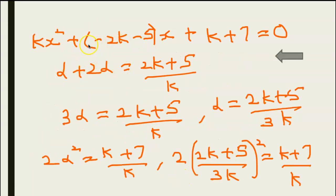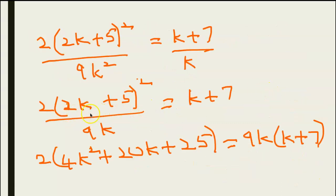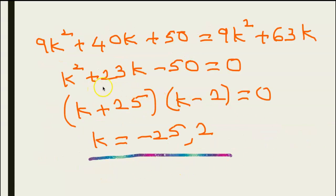So alpha + 2alpha = (2k+5)/k, giving 3alpha = (2k+5)/k, so alpha = (2k+5)/(3k). And alpha × 2alpha = (k+7)/k, so 2alpha² = (k+7)/k. Substituting for alpha and cross-multiplying gives a quadratic: k² + 23k - 50 = 0, which factors as (k+25)(k-2) = 0, so k = -25 or k = 2.